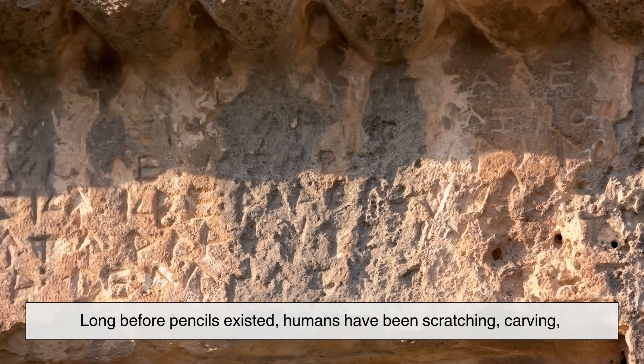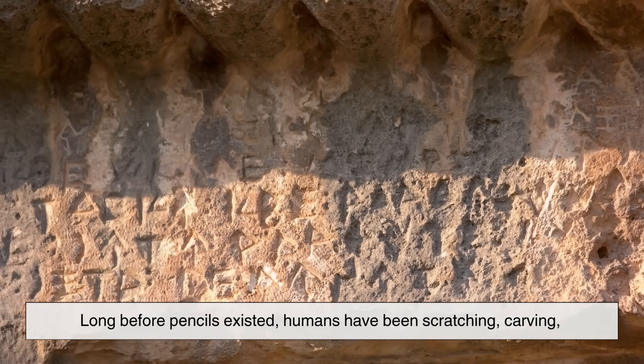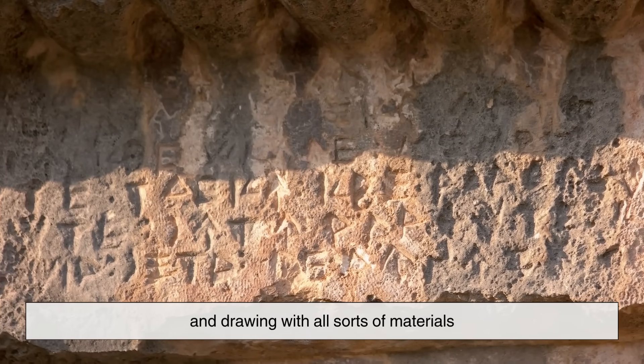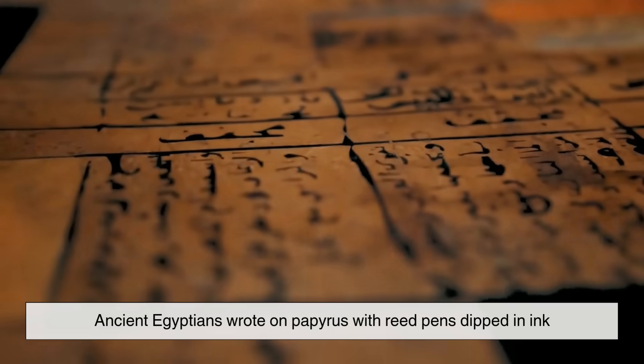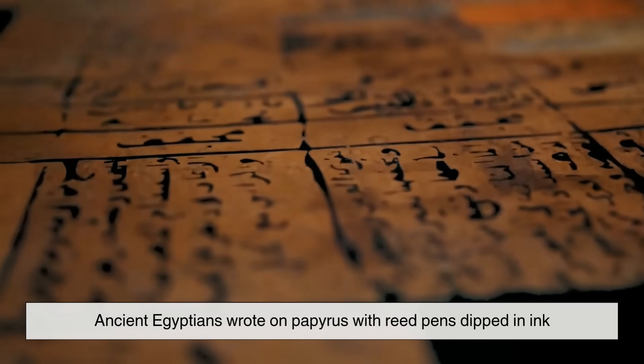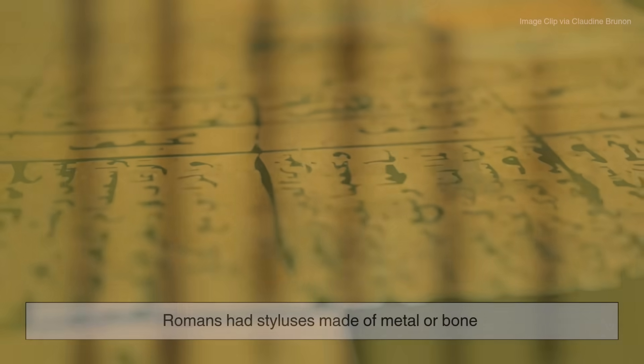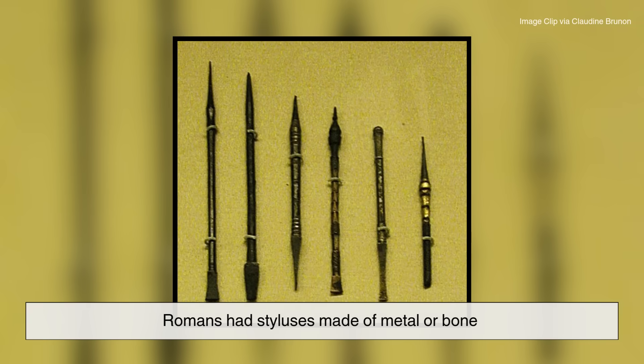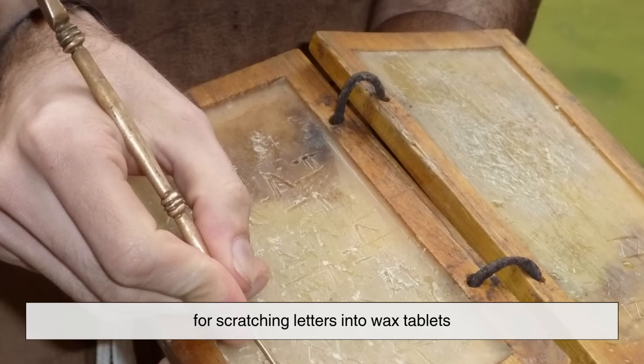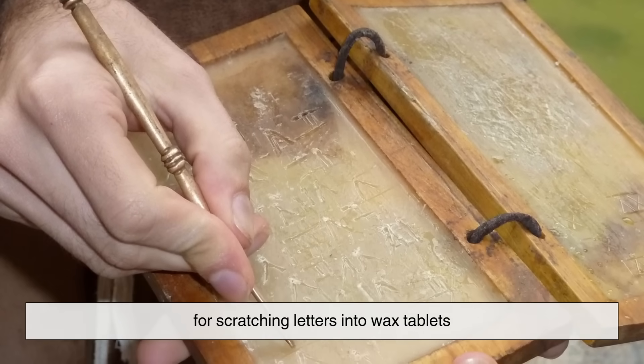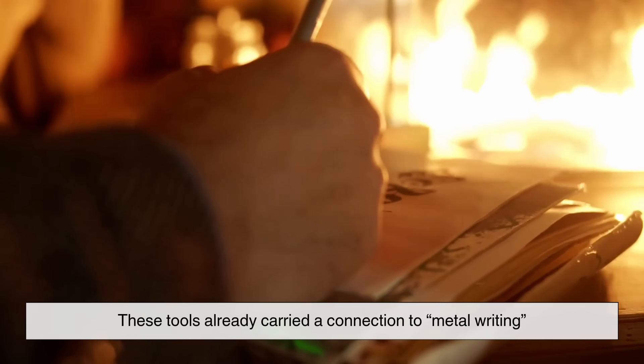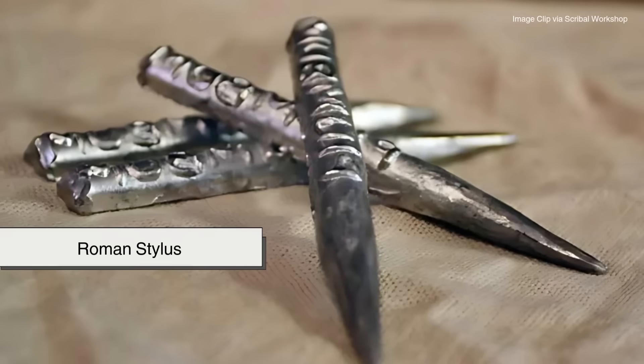Long before pencils existed, humans have been scratching, carving, and drawing with all sorts of materials. Ancient Egyptians wrote on papyrus with reed pens dipped in ink. Romans had styluses made of metal or bone for scratching letters into wax tablets. And if you think about it, these tools already carried a connection to metal writing.